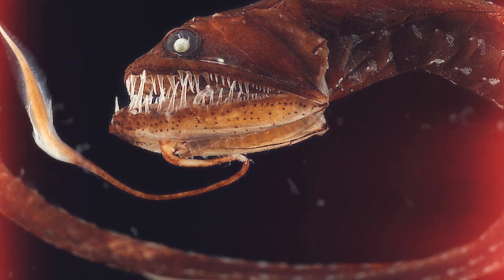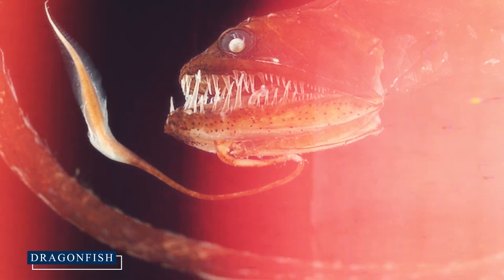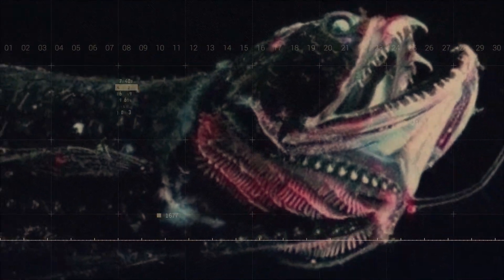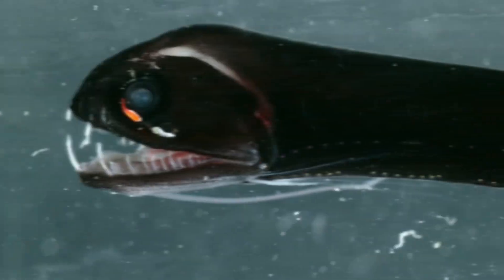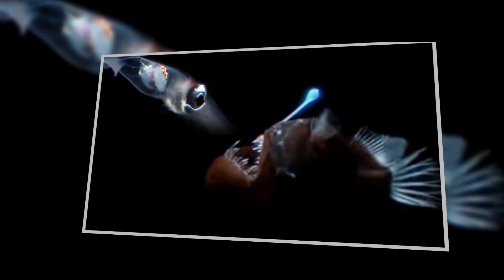But the anglerfish isn't alone in using this clever trick. The stoplight loosejaw, a type of dragonfish, takes this strategy to another level. It possesses a unique ability to produce red light, a color most deep sea creatures can't see. This gives the stoplight loosejaw a significant advantage, allowing it to illuminate and hunt its prey without being detected.